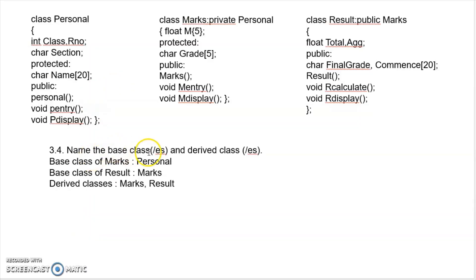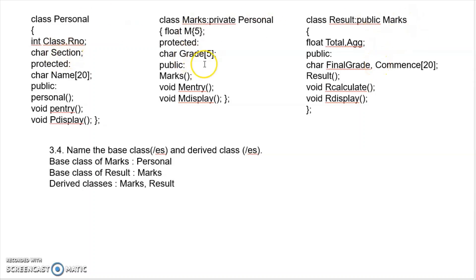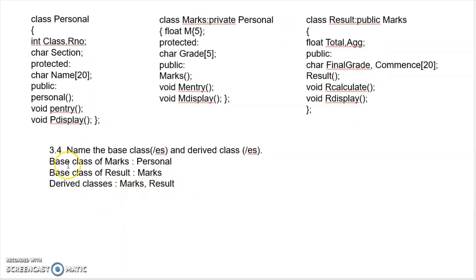Next question: name the base classes and derived classes. Since this is multilevel inheritance, there are two base classes and two derived classes. Personal and Marks are base classes for their respective derived classes. The derived classes are Marks and Result.